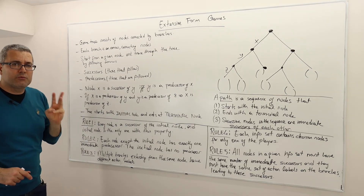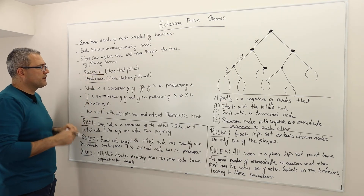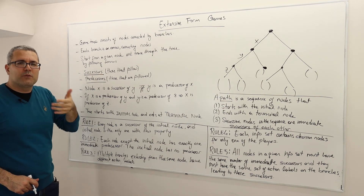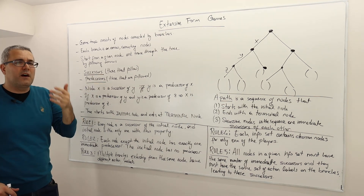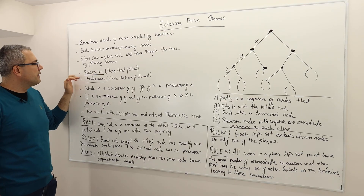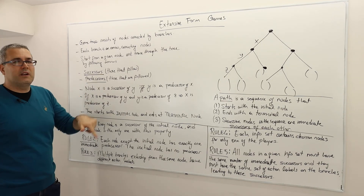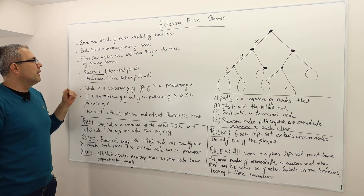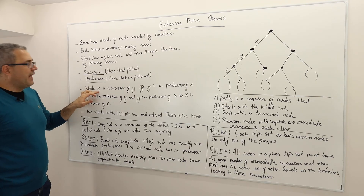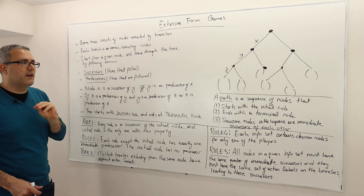Two words are very important and we're going to use them a lot: successors and predecessors. Successors are basically those that follow predecessors. You can think of it like elections in the United States — Donald Trump was the successor of Obama, and Obama is the predecessor of Donald Trump. Node X is a successor of Y if and only if Y is a predecessor of X.